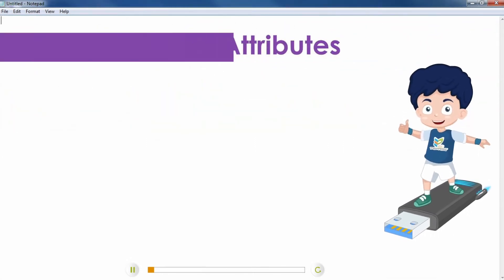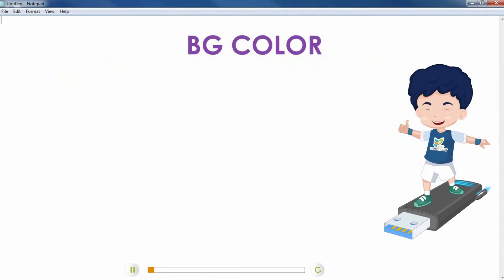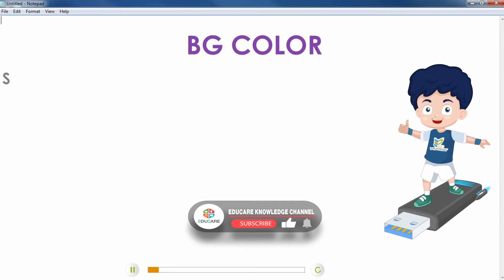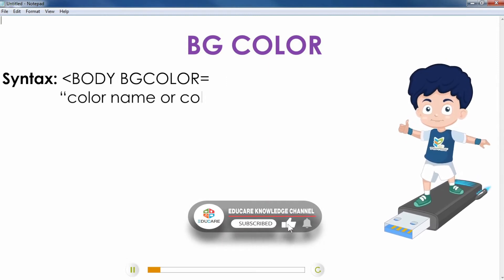Body Attributes. BG Color: BG Color attribute of body tag is used to change the background color of the HTML document. Syntax: Body BG Color equals color name or color code.